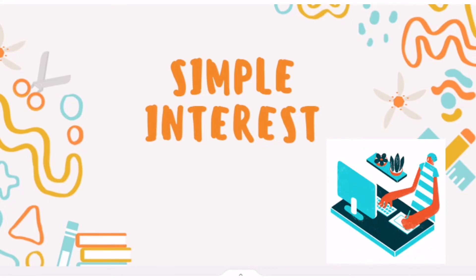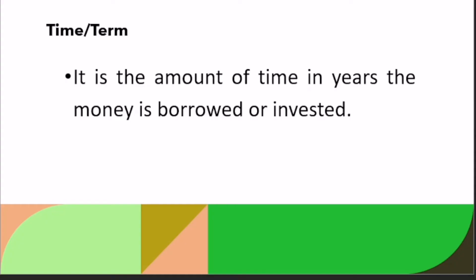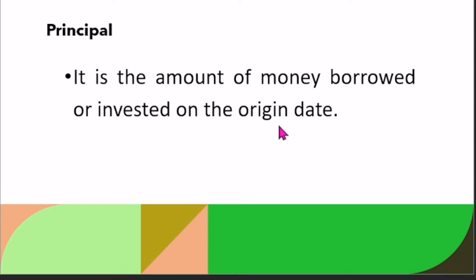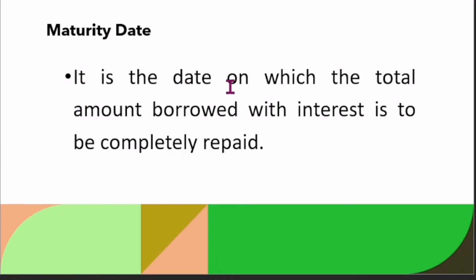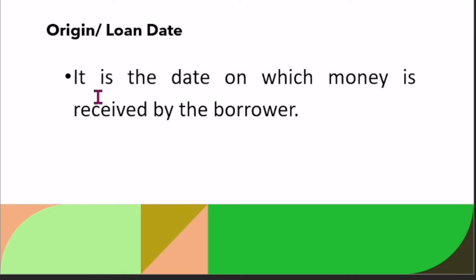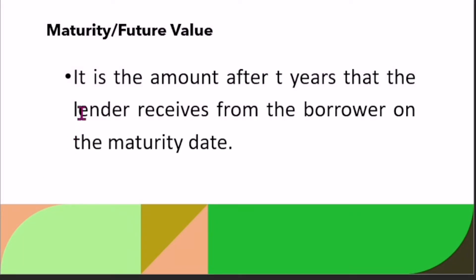Here are the different terminologies about simple interest that you can use for the succeeding lessons and problem solving. Time or term: it is the amount of time in years the money is borrowed or invested. Principle: it is the amount of money borrowed or invested on the origin date. Creditor: it refers to the person or institution that invests the money or makes the funds available. Maturity date: it is the date on which the total amount borrowed with interest is to be completely repaid. Origin or loan date: it is the date on which money is received by the borrower. Maturity or future value: it is the amount after t years that the lender receives from the borrower on the maturity date.